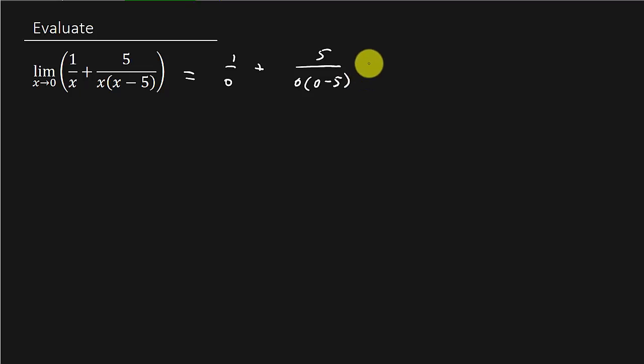Alright, and so that gives us 1 over 0 plus 5 over 0, and that does not equal 6 over 0. Okay, you know you can't do that.